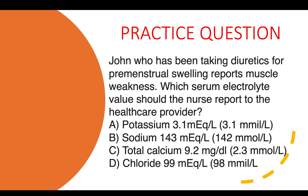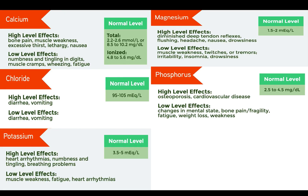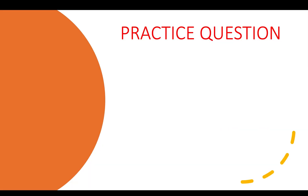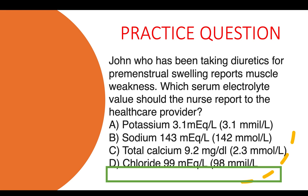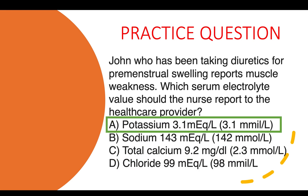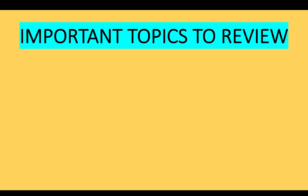Here's a practice question: John, who has been taking diuretics for premenstrual swelling, reports muscle weakness. Which serum electrolyte value should the nurse report to the healthcare provider? A) Potassium 3.1, B) Sodium 143, C) Calcium 9.2, or D) Chloride 99. The most out-of-range value is potassium at 3.1 — which is low. Low potassium causes muscle weakness, fatigue, and heart arrhythmias. The correct answer is A.